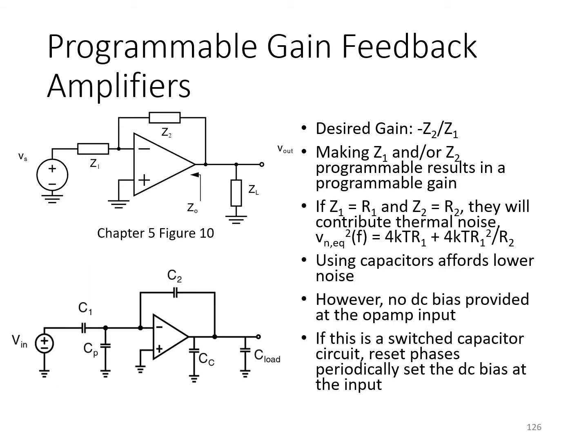An alternative that's often used when low noise performance is really important is to use capacitors for Z1 and Z2, C1 and C2 as shown here. Capacitors introduce no thermal noise on their own, so this results in improved noise performance. You're left in this circuit only with the noise introduced by the op-amp itself.